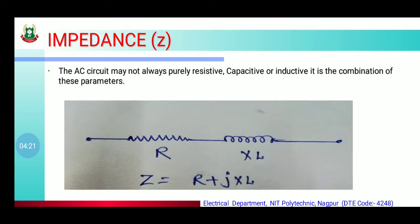Next is impedance. Impedance को हम Z से denote करते हैं — impedance again flow of current को oppose करता है। Impedance के दो forms होते हैं: rectangular form and polar form। The AC circuit may not always be purely resistive, capacitive, or inductive — it is a combination of these parameters। Circuit में RL, RC, या RLC — यानी resistance, inductance, capacitance, या तीनों का combination हो सकता है।